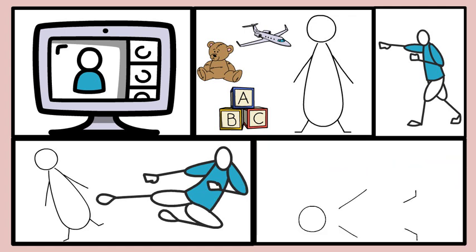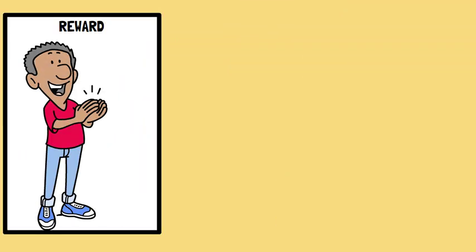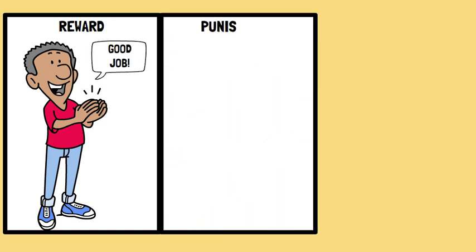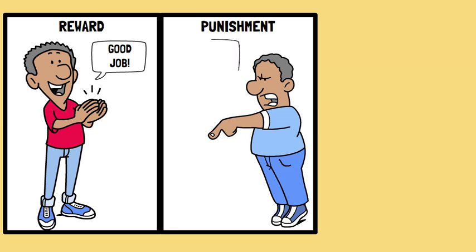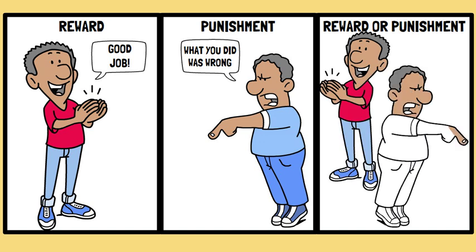This film has three versions. In one version, a group of children see the boy who is the model being rewarded or praised by an adult for being aggressive to the doll. In the second version, another group of children see the boy being punished for his aggressive behavior. In the third version, the third group of children are shown the boy being neither rewarded nor punished.